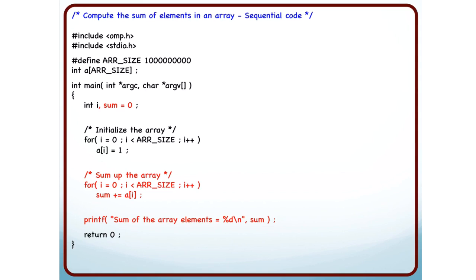And then I simply add up the elements of the array. How do I do that? I keep a variable sum, initialize it to 0 and within this loop, I just say sum plus equal to A i.